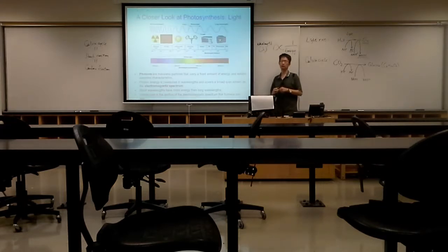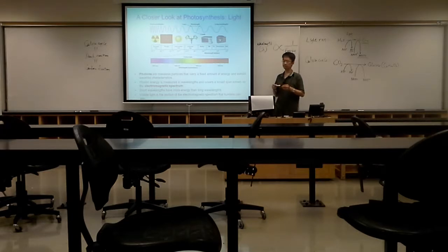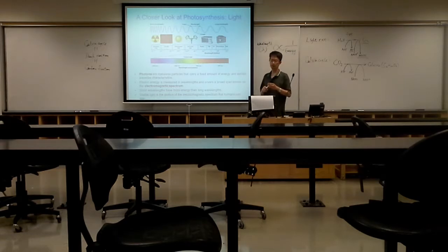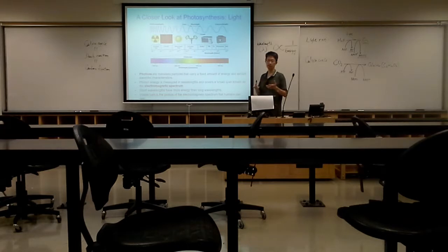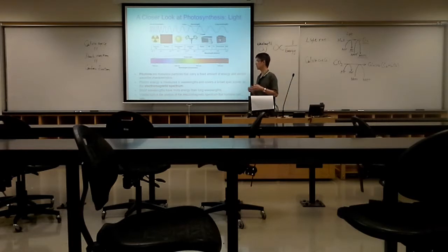Before we talk about the actual steps of photosynthesis, let's cover some basics about light. Light is made of photons, which are massless particles. They have characteristics of both particles and waves. Photons carry light energy. We call this the electromagnetic spectrum.